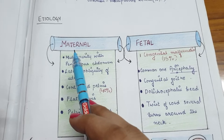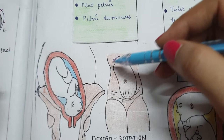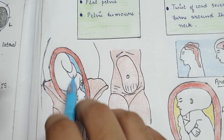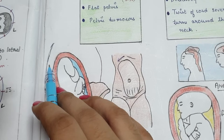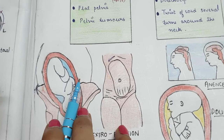The next maternal cause is lateral obliquity of the uterus, which means when the uterus rotates on its long axis towards the right side, favoring face presentation. This is also known as dextrorotation. The uterus rotates on its long axis towards the right or lateral side — this dextrorotation or lateral obliquity of the uterus favors face presentation.